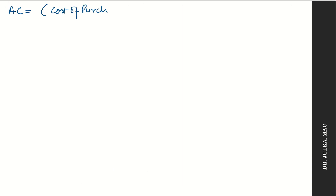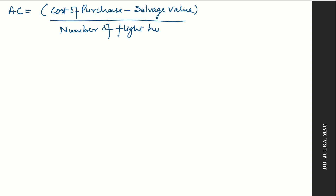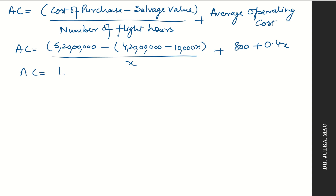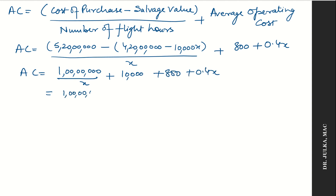Separating the average cost formula: average cost = (cost of purchase − salvage value) / flight hours + operating cost / flight hours, where the second term is the average operating cost. Substituting values: average cost = (5 crore 20 lakhs − (4 crore 20 lakhs − 10,000X)) / X + (800 + 0.4X). Simplifying gives: average cost = 1 crore/X + 10,000 + 800 + 0.4X = 1 crore/X + 0.4X + 10,800.